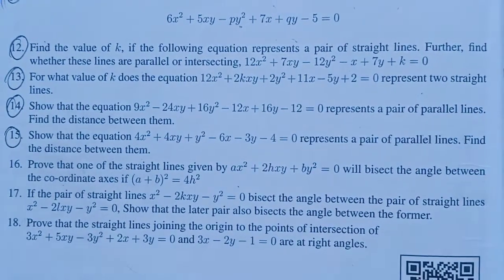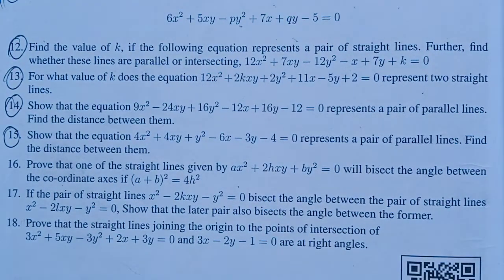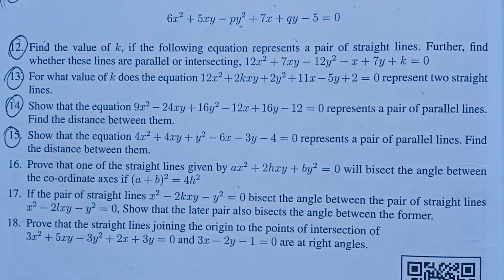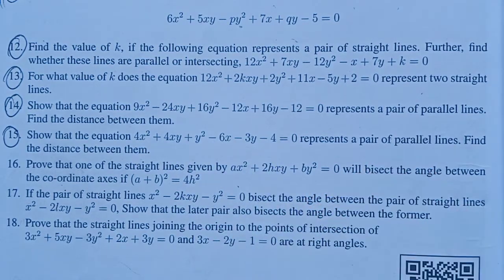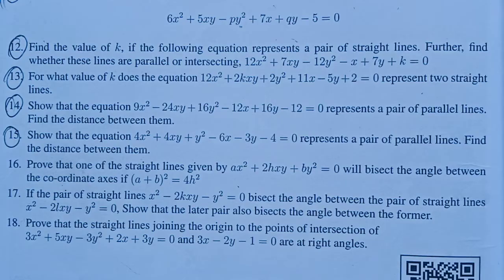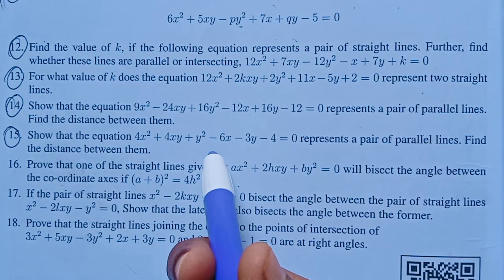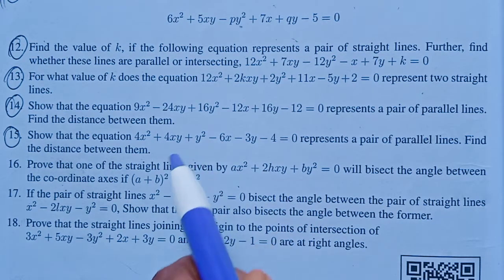Hi students, I am Veno. In 11th Maths chapter 6, exercise 6.4, 15th question, the question says to show that the equation 4x² + 4xy + y² - 6x - 3y - 4 = 0 represents a pair of parallel lines and find the distance between them.